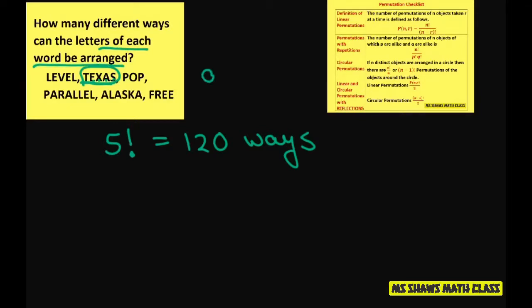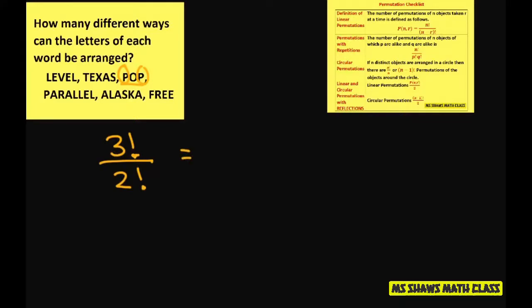Remember, permutations always deal, when you hear the word arranged, that's a permutation. Alright. Next, POP. So you have 3 letters and the 2 P's. So it's 3 factorial over 2 factorial. So this is 3 times 2 times 1 divided by 2 times 1, and that equals 3 ways the word can be arranged.